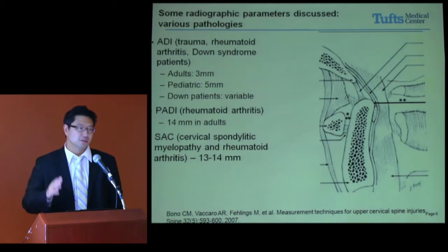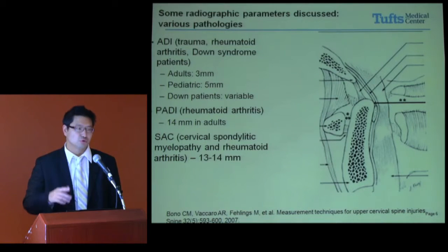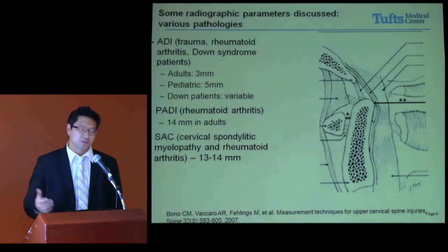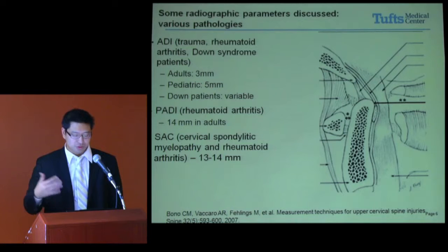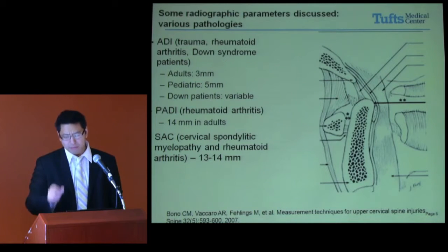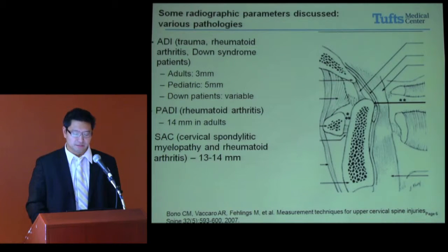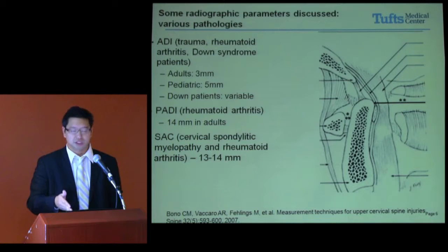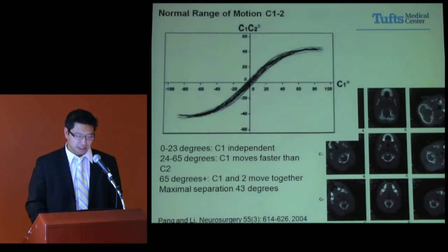We talked about the ADI. I'll also talk a little bit about the P-ADI, the normal canal width — what some people call the space available to the cord — basically the space behind the dens of C2 and the posterior arch of C1.